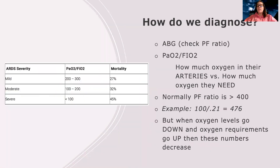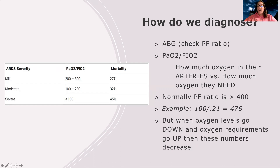We diagnose ARDS off the ABG. We check what's called a PF ratio — a division of the patient's PaO2, which is the number on the ABG showing how much oxygen is in their arteries, divided by how much oxygen they're on. A normal PF ratio is greater than 400. For example, if my PaO2 is 100 and I'm breathing 21% oxygen (room air), my PF ratio would be 476.